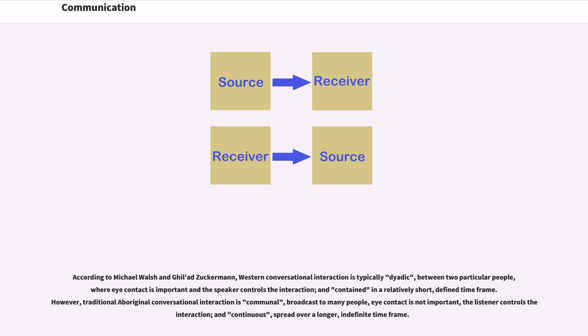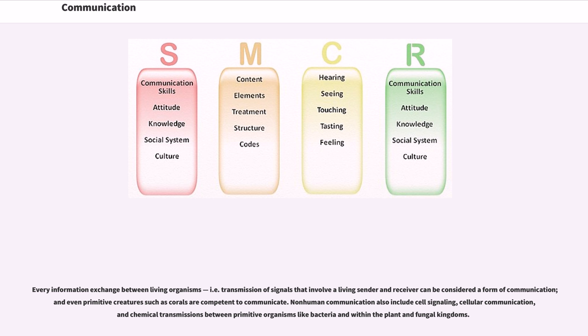Every information exchange between living organisms—that is, transmission of signals that involve a living sender and receiver—can be considered a form of communication. Even primitive creatures such as corals are competent to communicate. Non-human communication also includes cell signaling, cellular communication, and chemical transmissions between primitive organisms like bacteria and within the plant and fungal kingdoms.